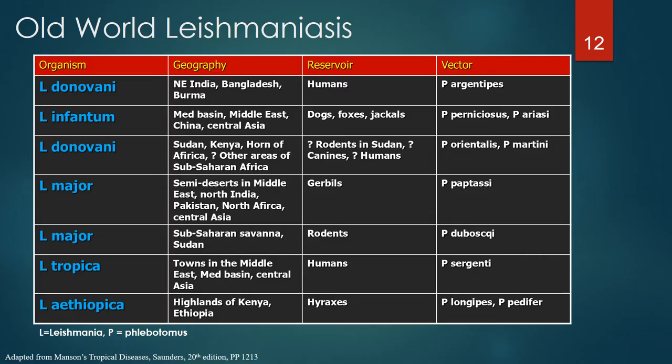Leishmaniasis can be divided into Old World and New World forms. The Old World organisms include two forms of Leishmania donovani — one in Asia and one in Africa — Leishmania major with forms in the Middle East/North Africa and Sudan/Sub-Saharan Africa, Leishmania tropica in the Middle East, Mediterranean Basin, and Central Asia, and Leishmania ethiopica in Ethiopia and the highlands of Kenya. Reservoirs include humans, canines, and a variety of rodents.